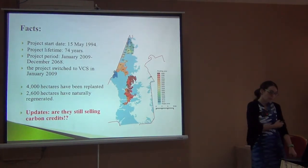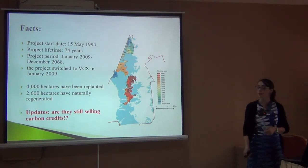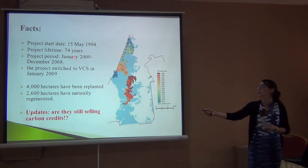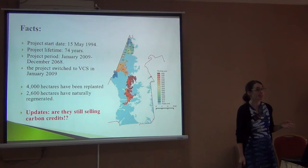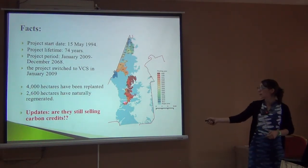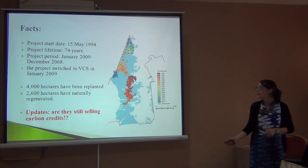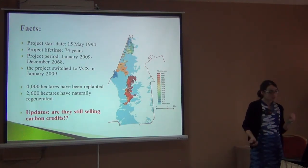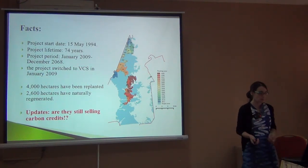It's actually one of the oldest projects in Africa. They started in 1994 to plant trees and already planned to live for 70 years — imagine, the person who started would not see the end, but they're thinking about their children. They start to plant trees in the middle, and with time they've been planting trees in all these other places. In 2009 they were certified by another company, then changed to VCS because it's the most recognized at the moment.